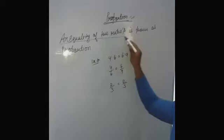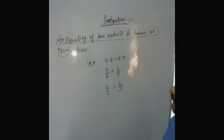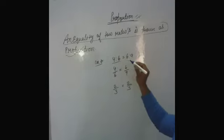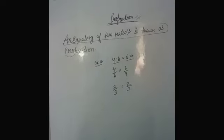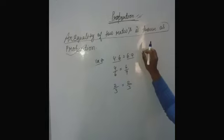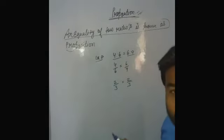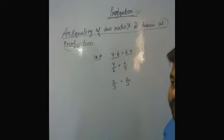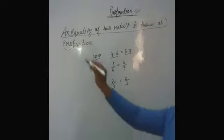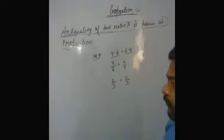An equality of two ratios is known as proportion. For example, 4 is to 6 equal to 6 is to 9. If they are equal ratios, then they are in proportion. If they are not equal ratios, they are not in proportion, because an equality of ratios is known as proportion.